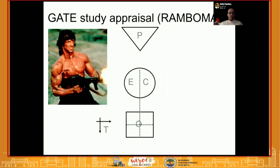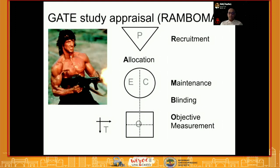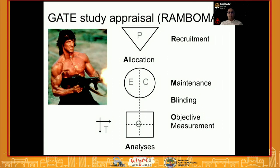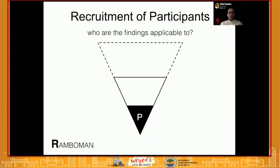For that paper, you can use the mnemonic RAMBO to analyze every step of the PICOT in terms of critical appraisal. For participants, the first letter of the mnemonic is Recruitment, then Allocation into the two groups — exposure and control — then Maintenance of how the two groups were maintained, then Blinding in terms of how the objective assessment was done, and lastly Analysis. If you remember this mnemonic at every step, you will be able to question the paper as to its validity.